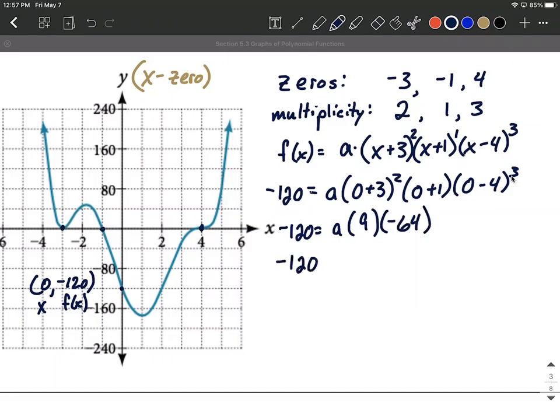So maybe just another step or two, we have a multiplied by nine times negative 64 makes negative 576a. And to get a all by itself, we'll divide both sides by negative 576. And with a little bit of reducing down, we can make this into a positive 5/24.